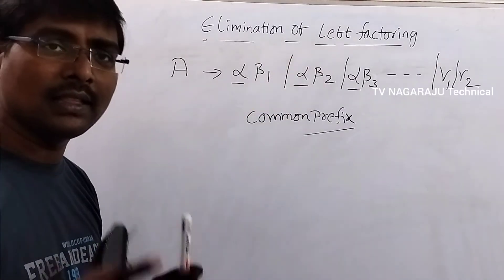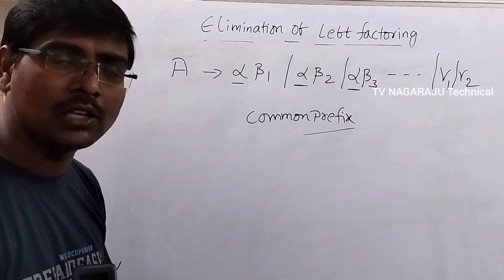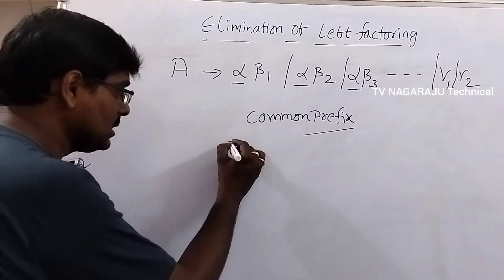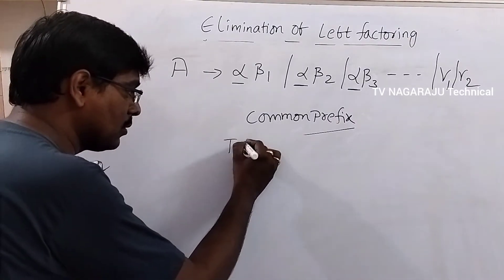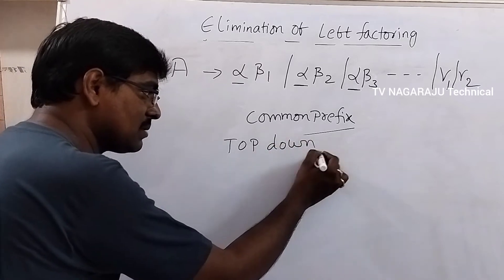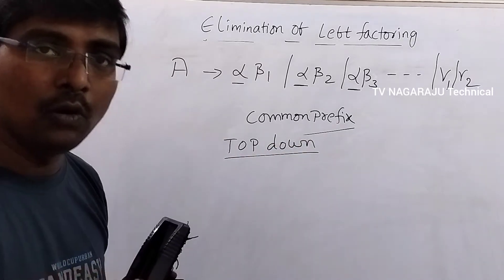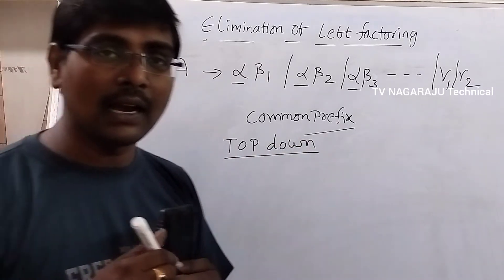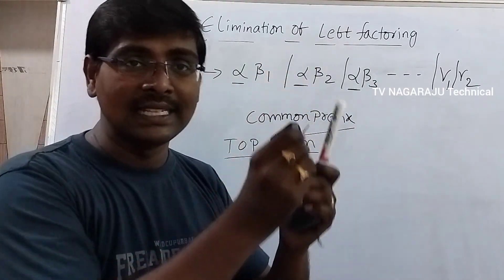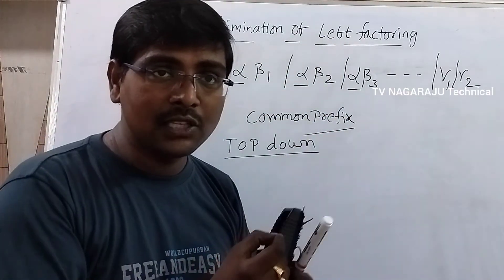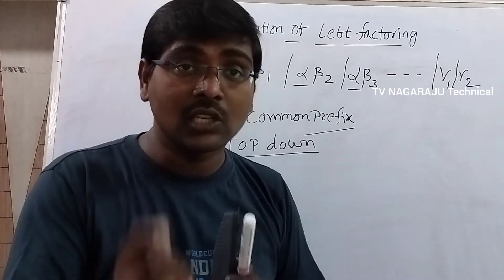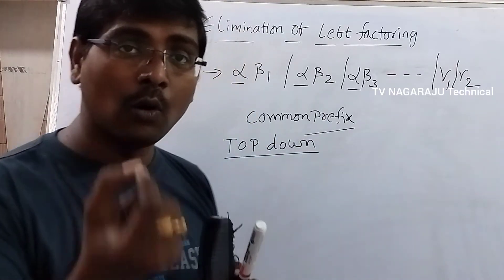If at least more than one production contains the common prefix, then it is called left factoring. So what is the need for elimination of left factoring? There are two types of parsers: one is top-down and the second one is bottom-up. In the top-down parser, the concept is to start from the starting symbol and step by step derive a string.